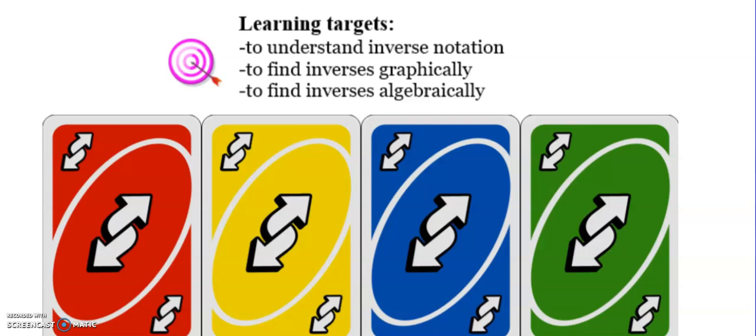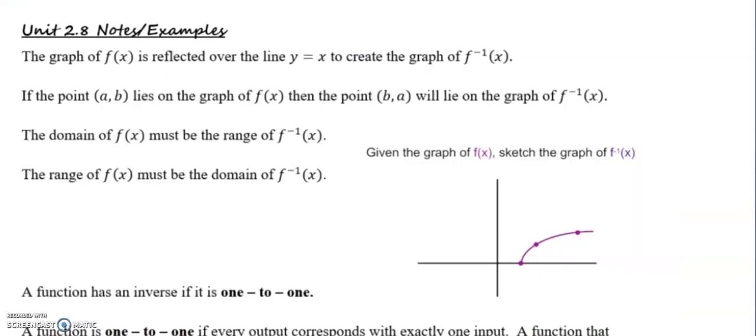Today we're going to be learning all about inverses: inverse notation, how to find inverses from a graph, and how to find inverses using algebra. I put up some uno reverse cards here just as a way to think about inverse is undoing an operation. We want to be careful because sometimes we mix up the words inverse with opposite and it's not quite the same. Inverse means reversing, undoing a function.